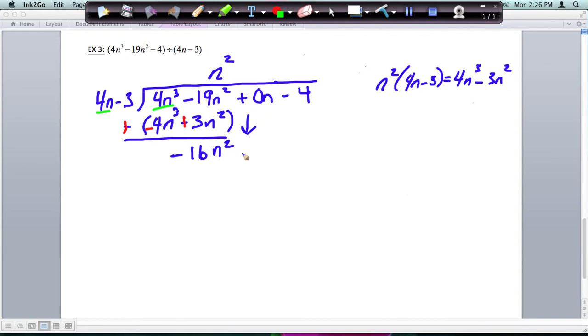Now bring down the 0n, and we're going to do the same thing. What do I need to multiply 4n by to get negative 16n squared? And I need to multiply it by negative 4n in order to get that negative 16. So let's do that off to the side.